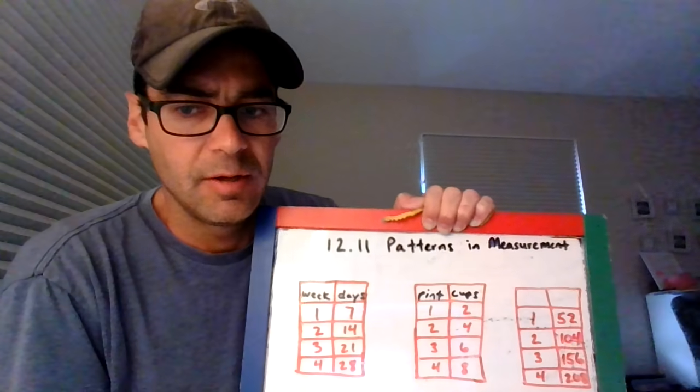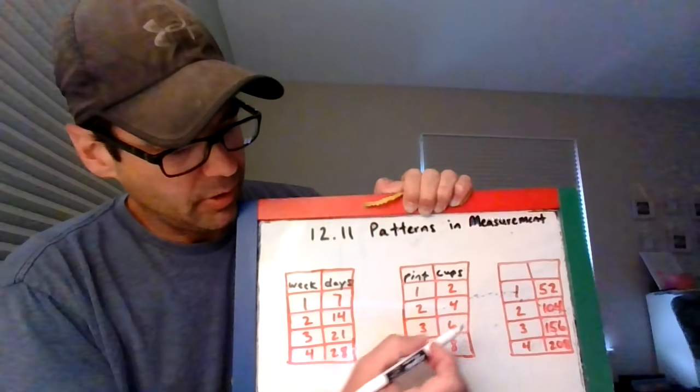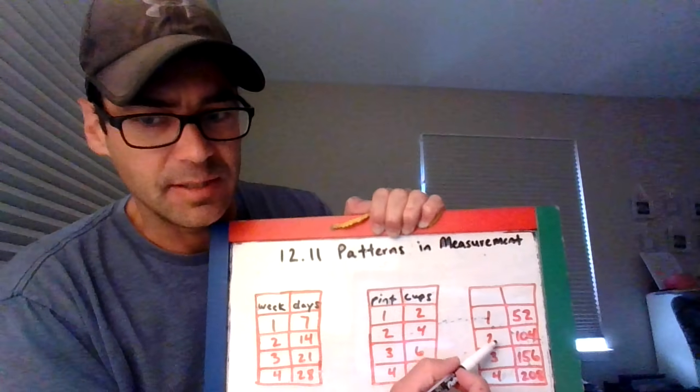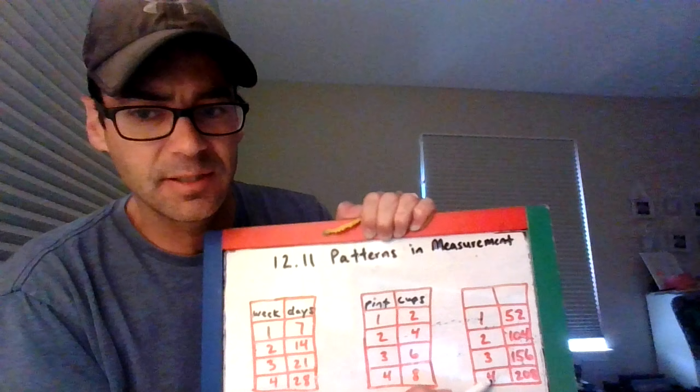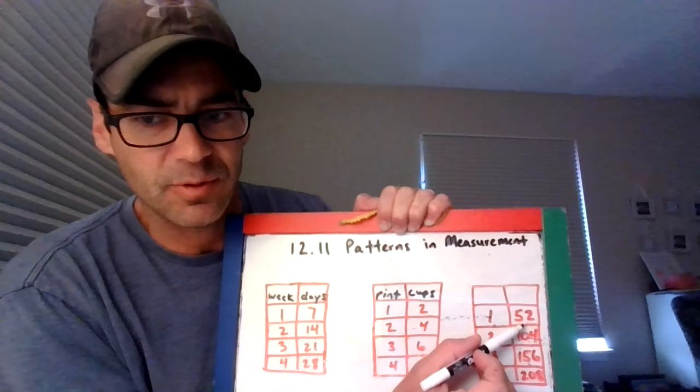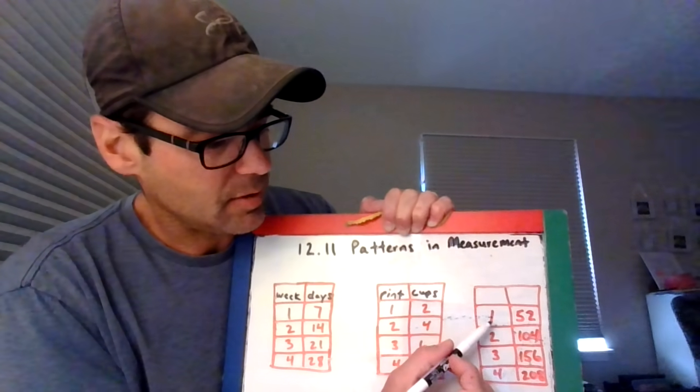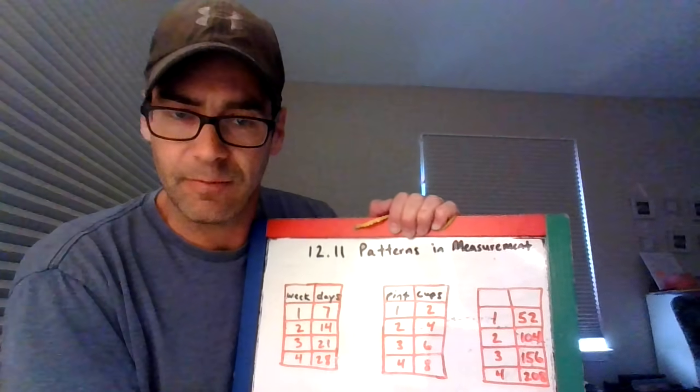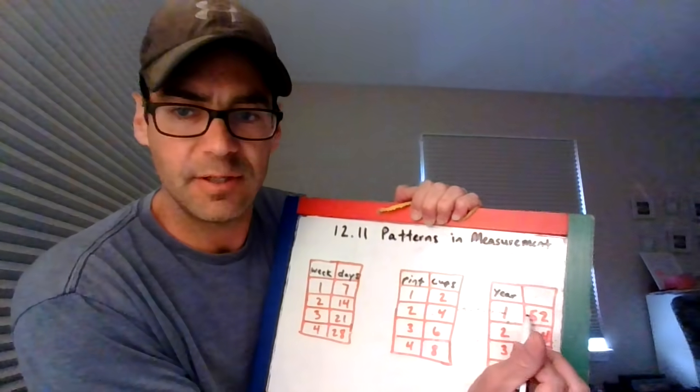My last example is a little bit more similar to my first example. We're looking that for every one of something is equal to 52 of something else, which would mean two is equal to 104, three is equal to 156, and four is equal to 208. This right column, I am actually skip counting by 52. Each time I'm adding 52 because each time I'm going up one. What has one of something equal to 52 of something else? Maybe you've guessed it. For every one year, there are 52 weeks.